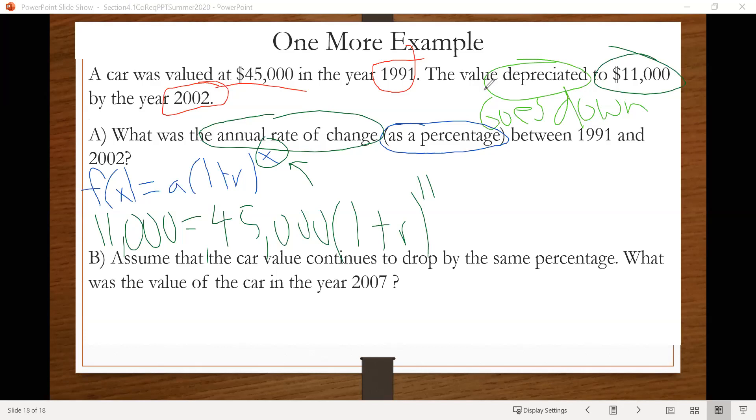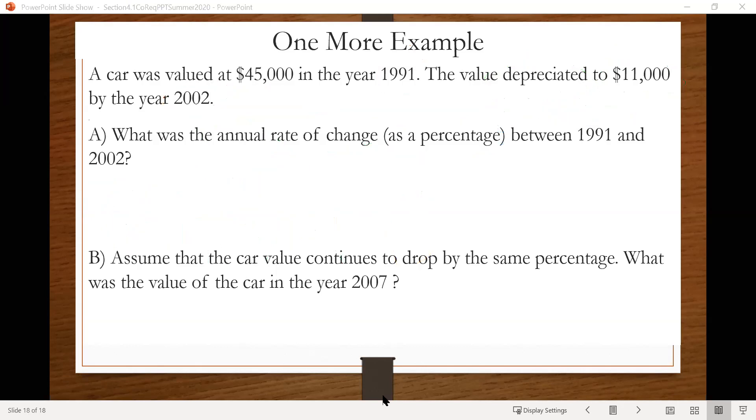All right, and now we can solve for the value of R here. So what I'm going to do is go to a different page here so we can work this out. Okay, so here we have a little more space. So again, our setup was, or sorry, 11,000 equals 45,000 times 1 plus R to the 11th.